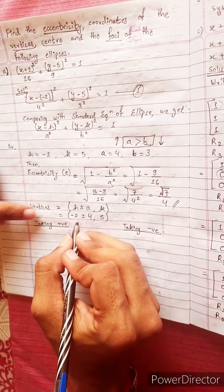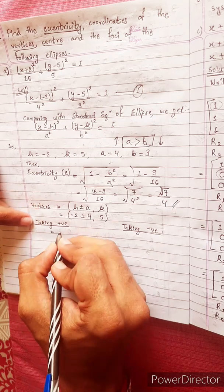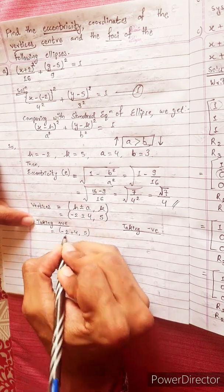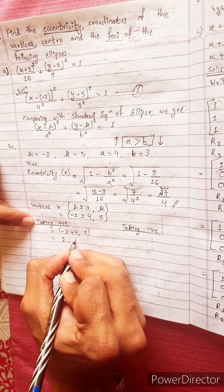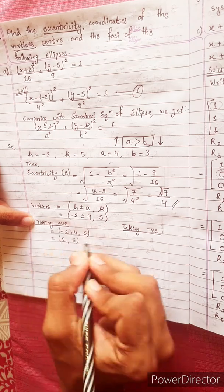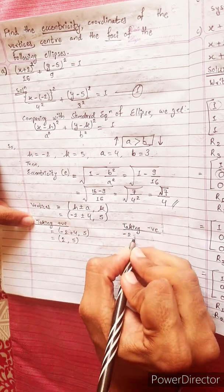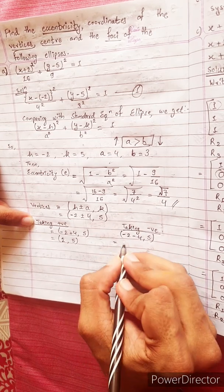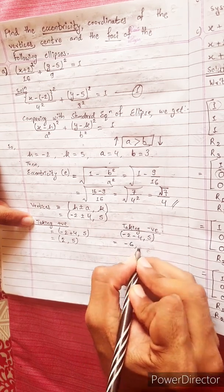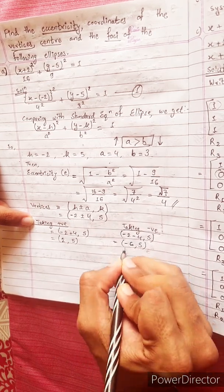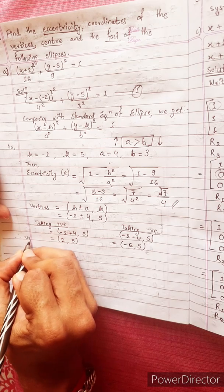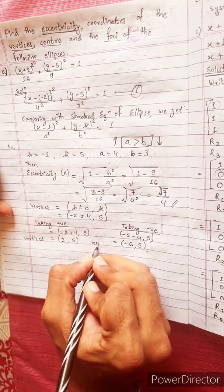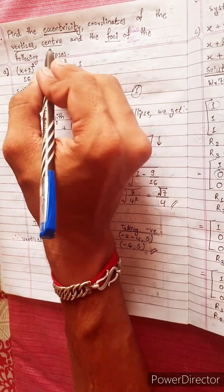The values of the vertices: taking positive — minus 2 plus 4, comma 5 — equals (2, 5). Taking negative — minus 2 minus 4, comma 5 — equals (minus 6, 5). Therefore, the vertices are (2, 5) and (minus 6, 5).